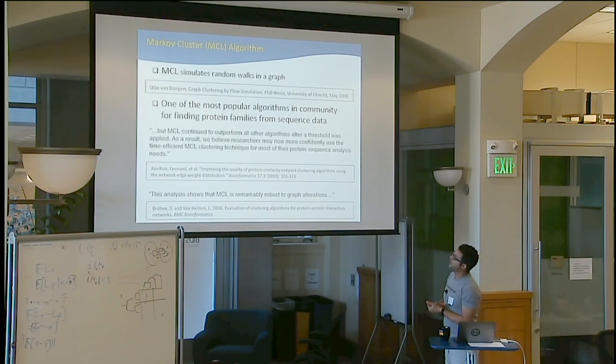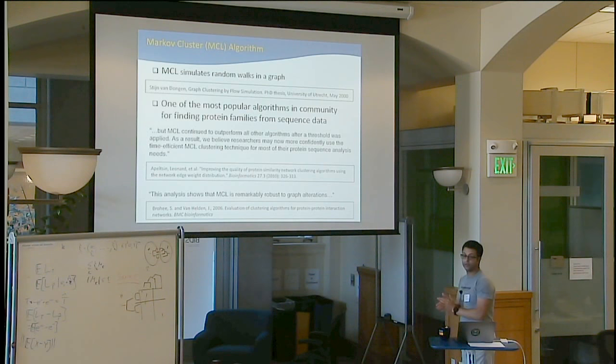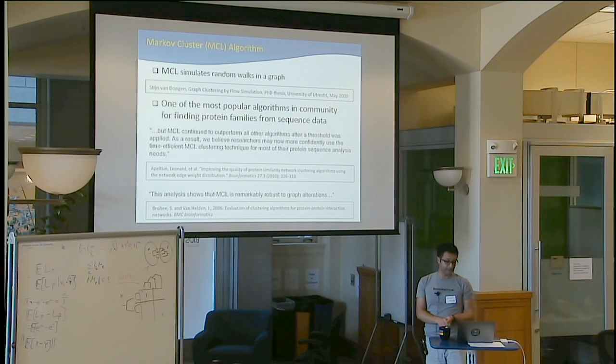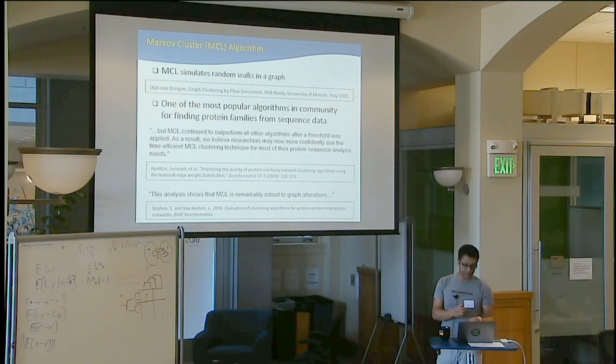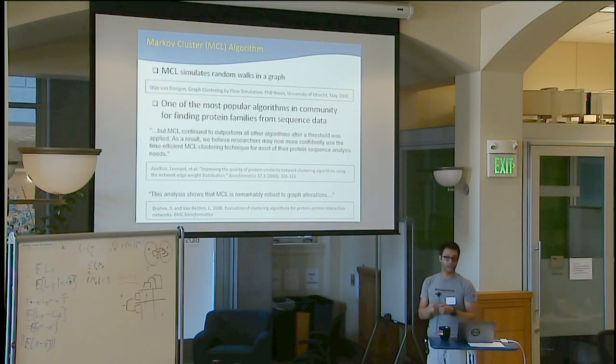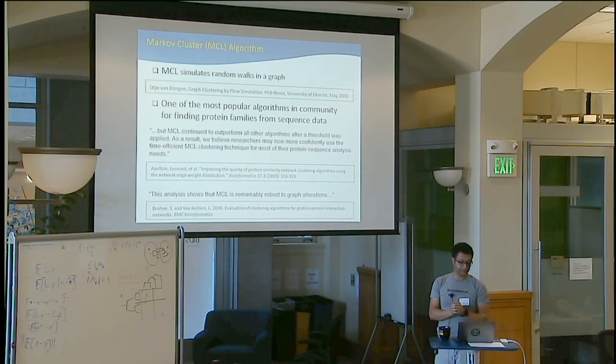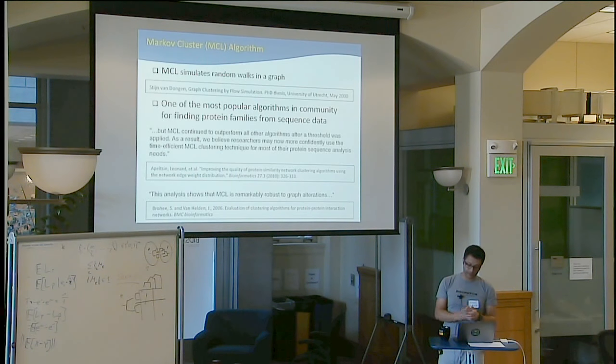So MCL Markov clustering is horribly popular in this problem domain. And some of the codes, when people actually evaluated and tried to figure out whether they want to use other clustering algorithms, it turned out, especially for this protein sequence analysis, that's not the case. First, it's really robust for alterations of the graph. That's not usually common in a lot of algorithms that's been tried. And it's actually pretty fast.